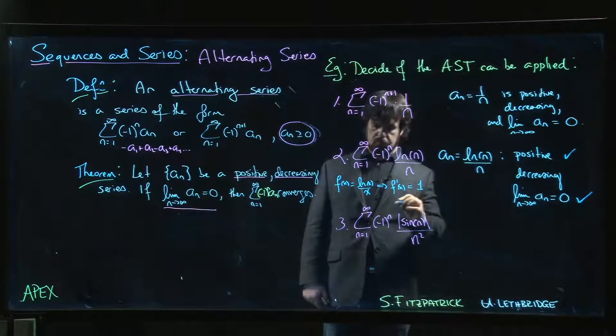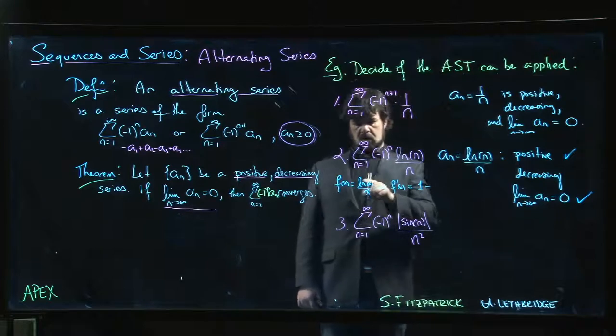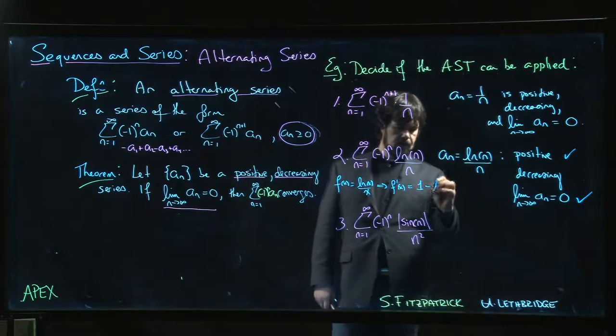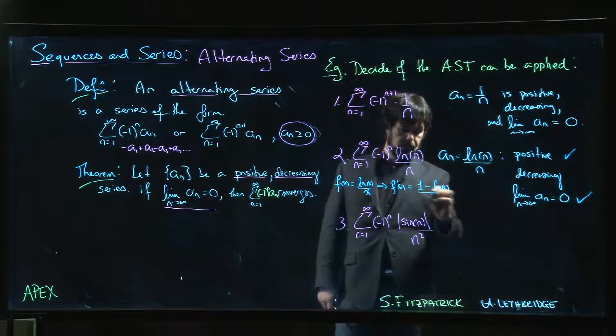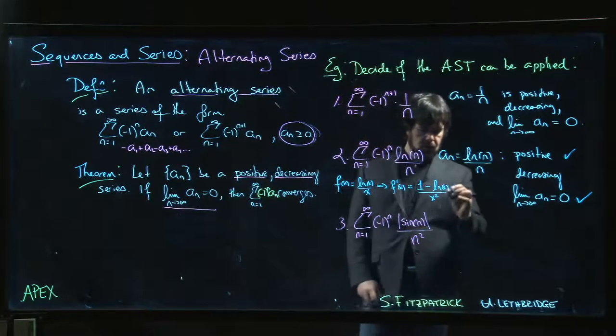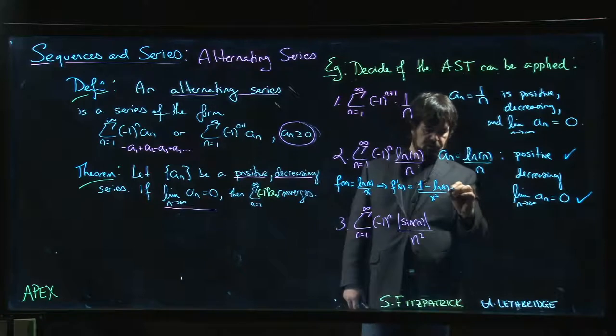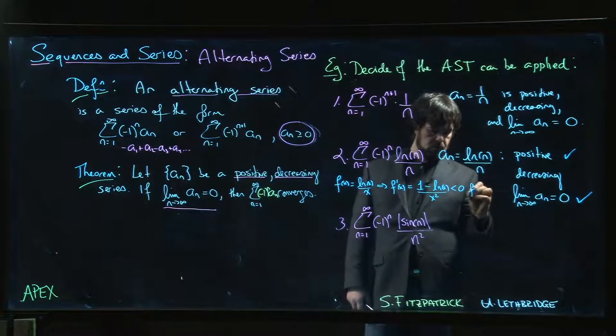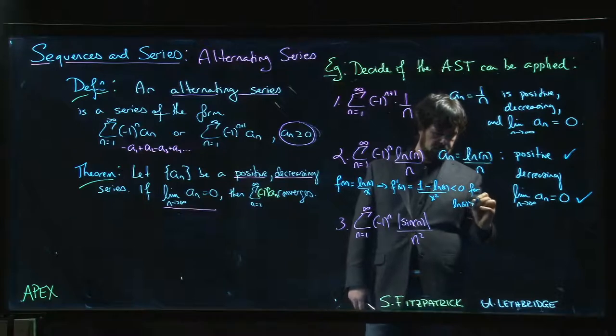1 over x times x is 1, minus top times the derivative of the bottom, just log x, bottom squared. Well, that's going to be less than 0 for log x bigger than 1.